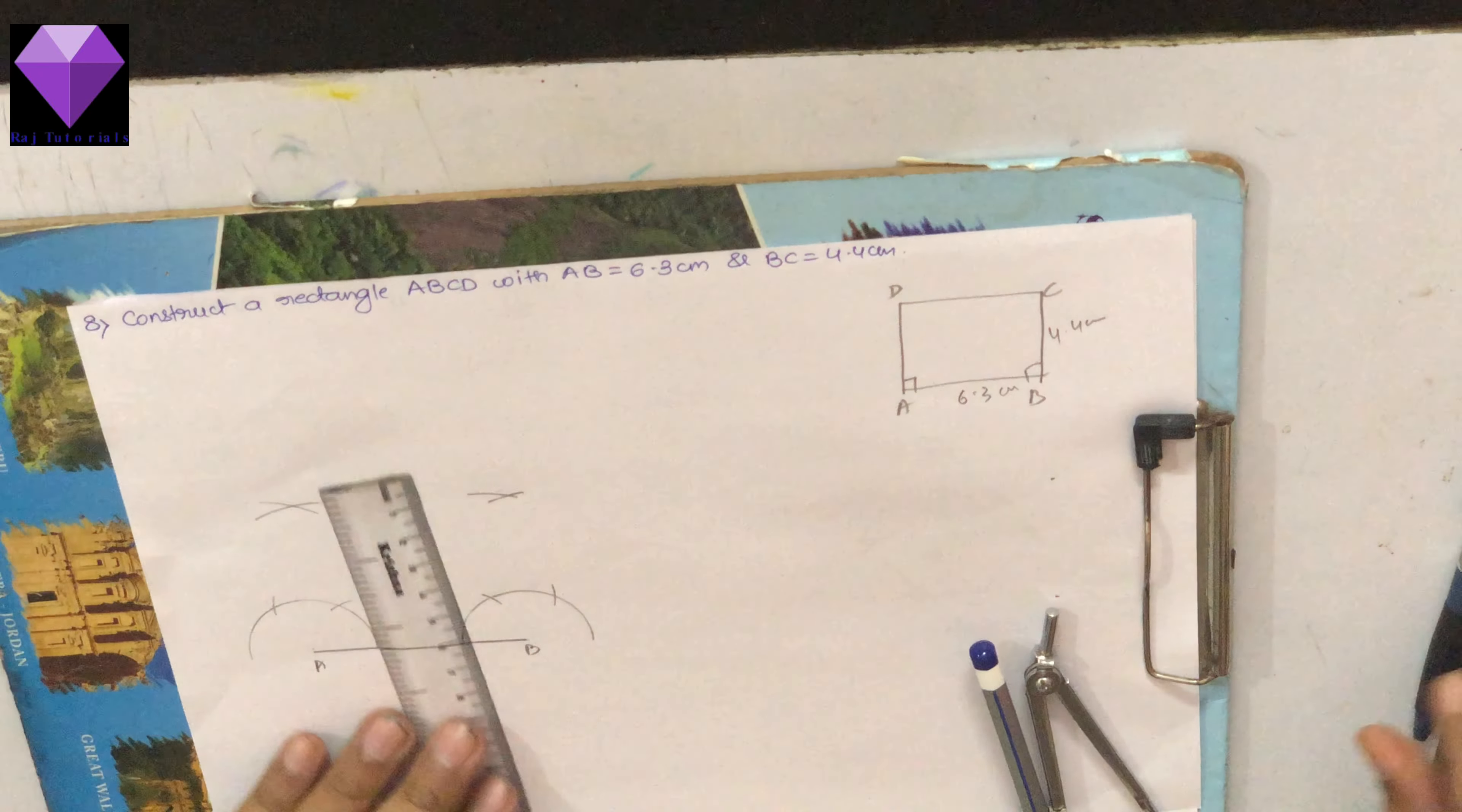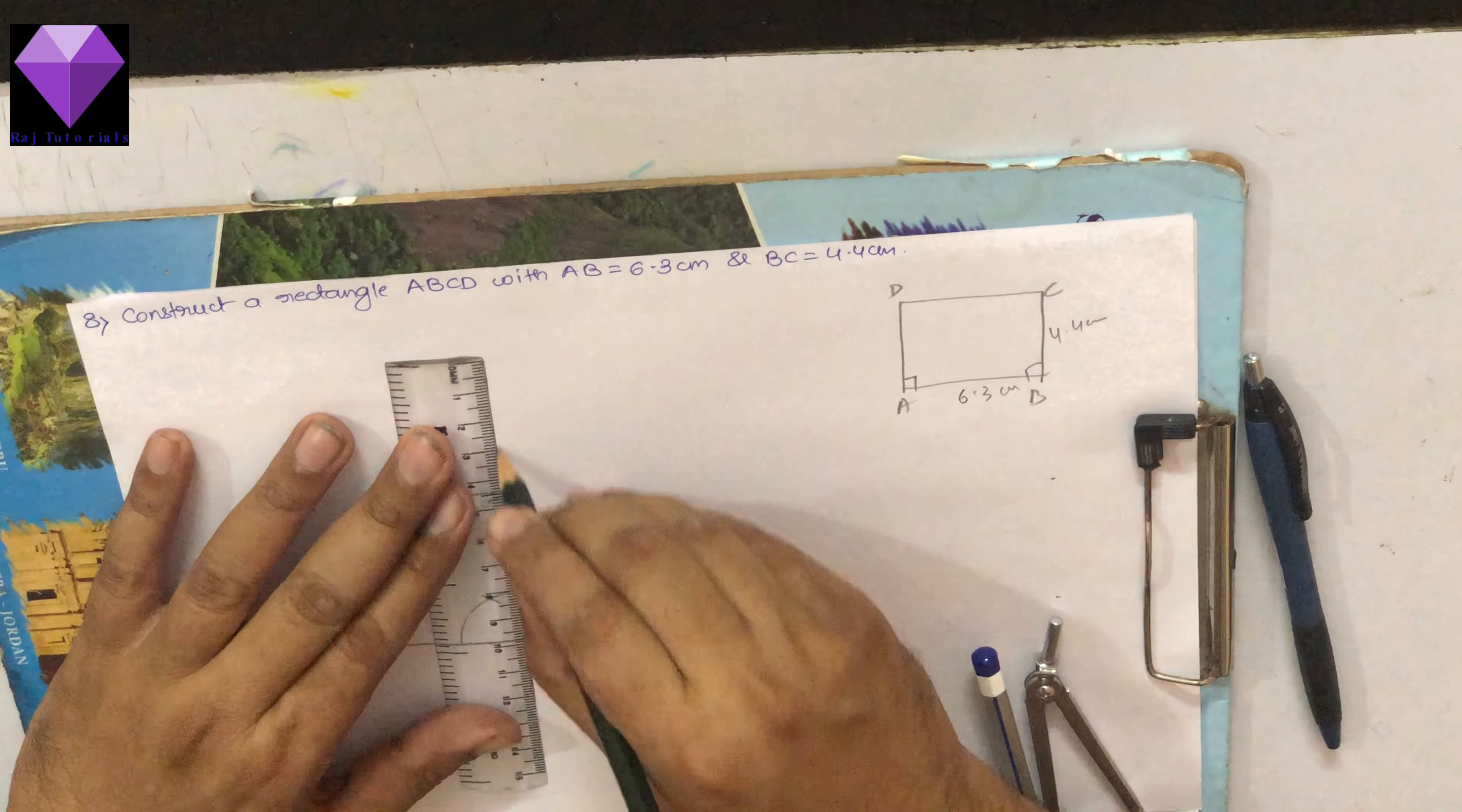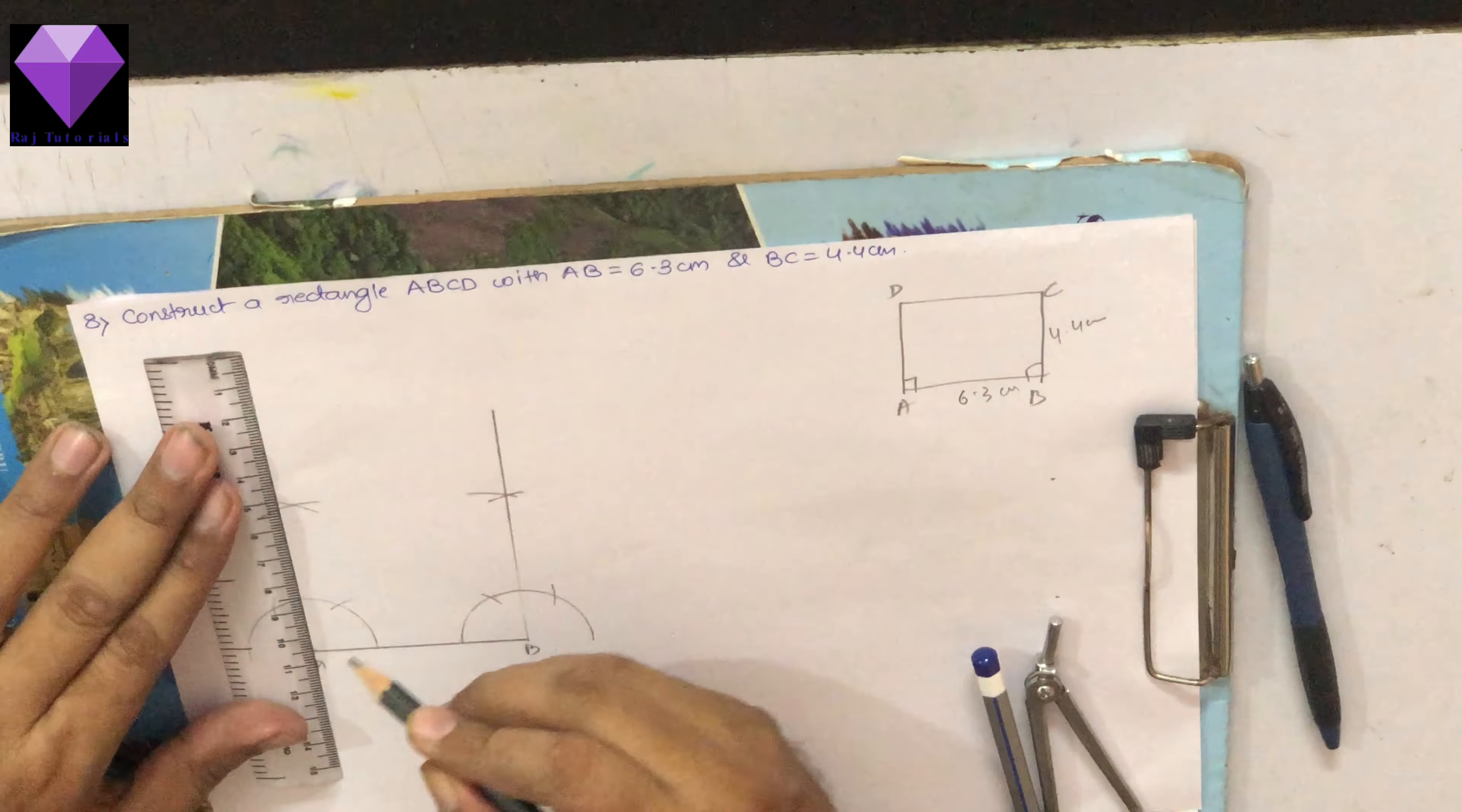Now I will be joining B with this arc and elongating, A with that arc and elongating.